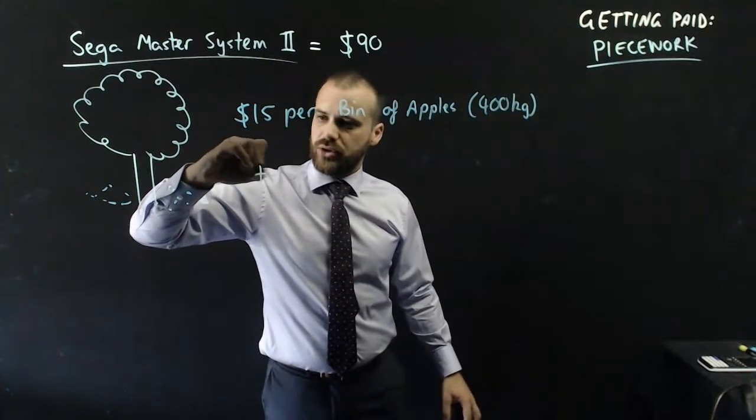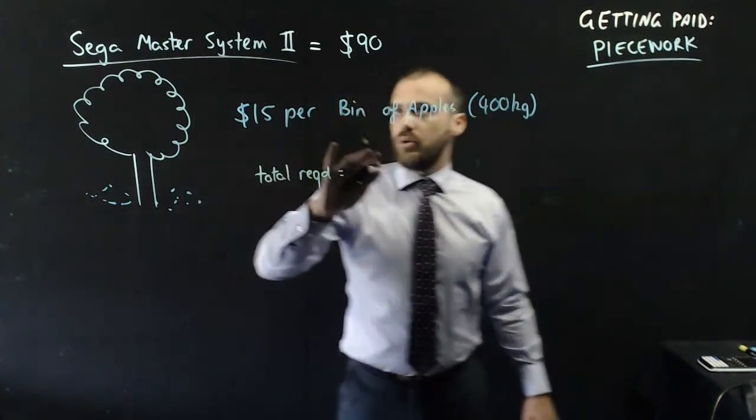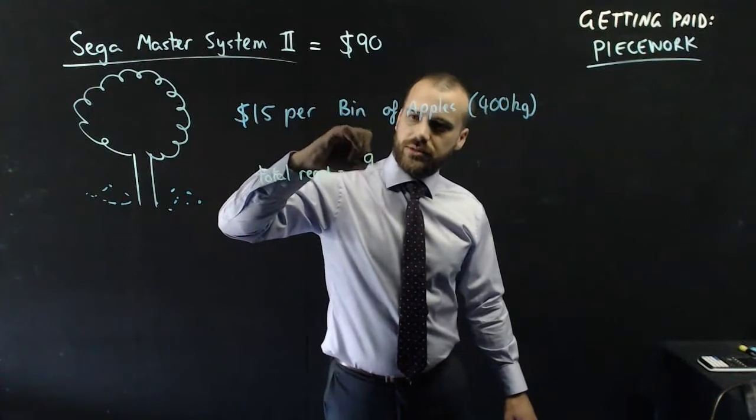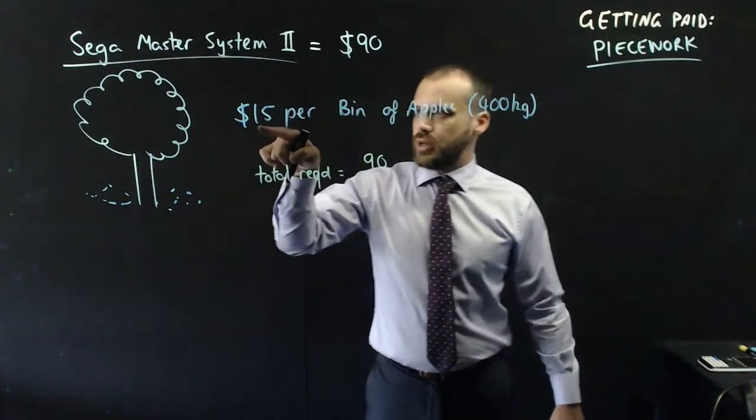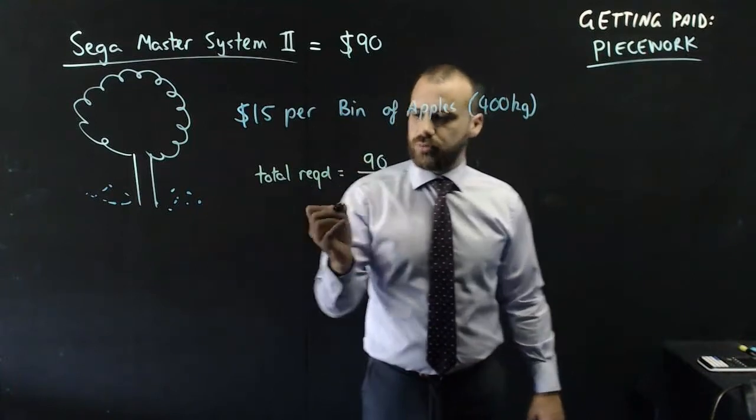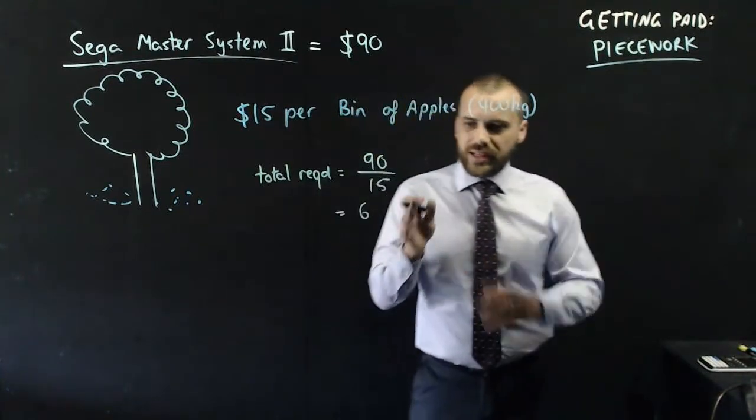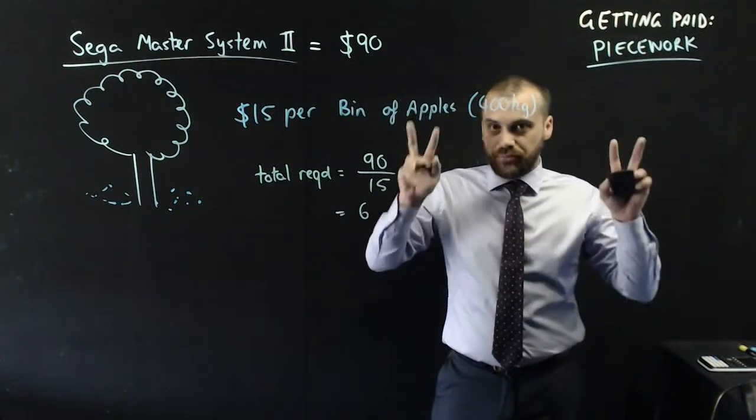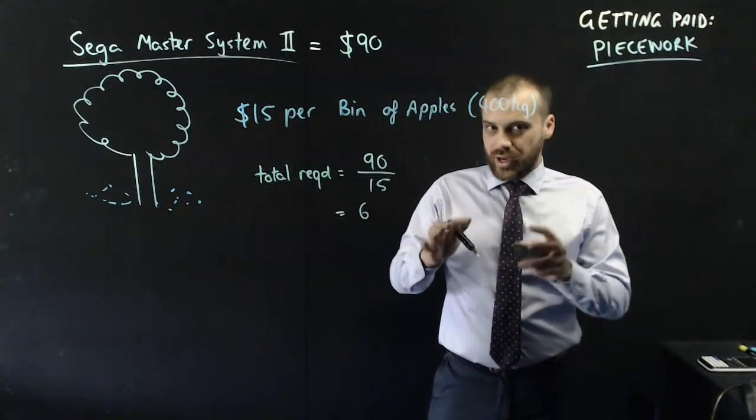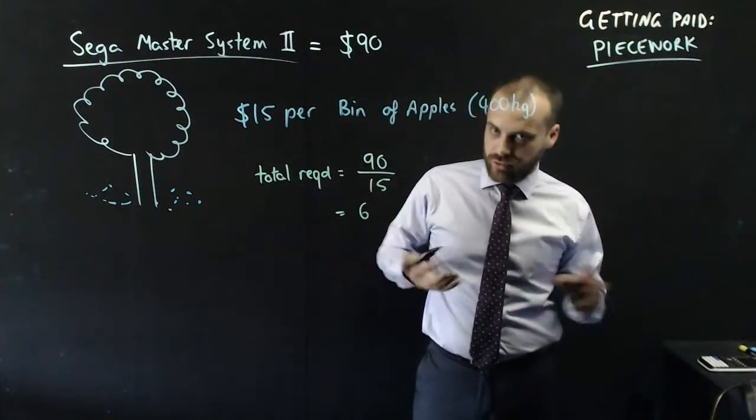Okay. Total required. Well, we want $90, and we're getting paid $15 per bin. So, 90 divided by 15 gives us 6. That's 6 bins - the total number of pieces of work we need to do. So we need to pick 6 bins of apples up off the ground.